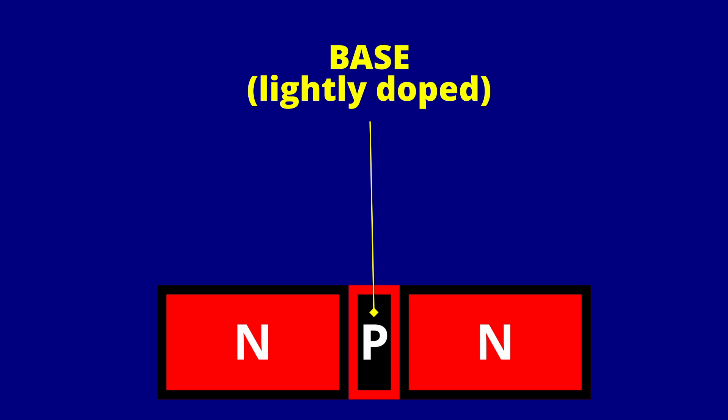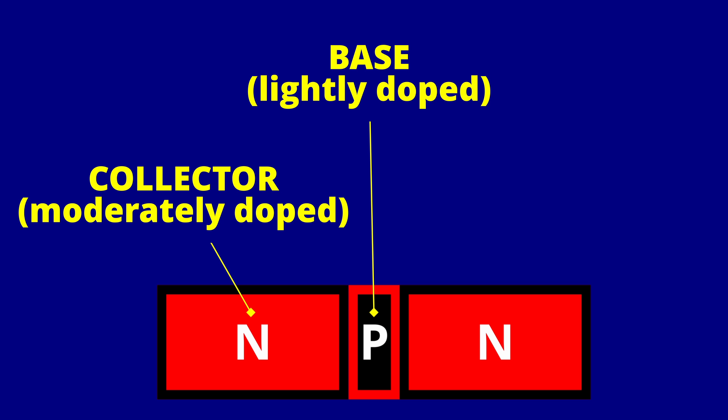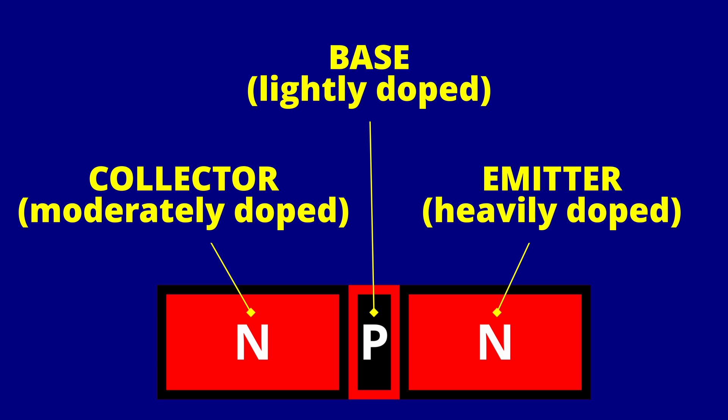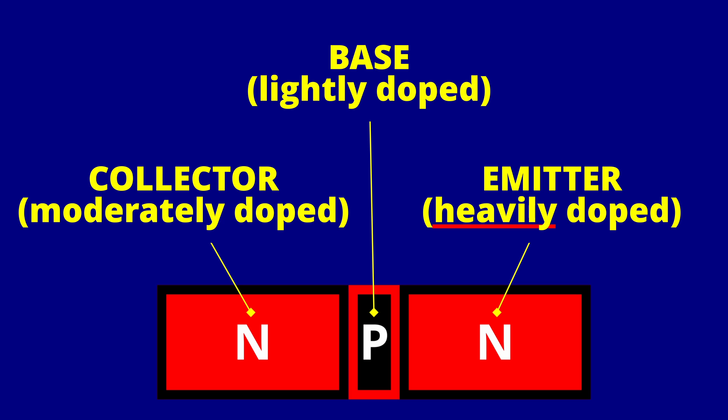The center P-type material is referred to as the base of the transistor. This region is lightly doped. One of the N-type materials is referred to as the collector. This region is moderately doped. The remaining N-type material is the emitter. This region is heavily doped. The actual physical width of the base material is generally very, very narrow as compared to the emitter and the collector. As you might have already noticed, the doping of the material used for the emitter and the doping of the material used for the collector is different. Thus, the emitter and the collector are not interchangeable.